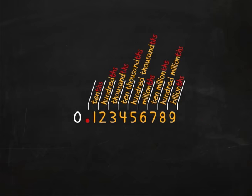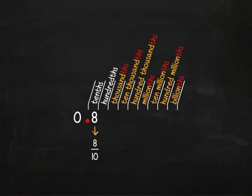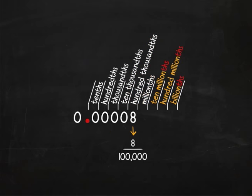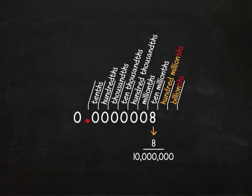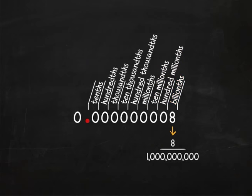These decimal numbers are the same as fractions. Eight-tenths can also be written like this. Eight-hundredths can look like this. Eight-thousandths looks like this. Here you have eight ten-thousandths, eight one-hundred-thousandths, eight millionths, eight ten-millionths, eight one-hundred-millionths, eight billionths, and so on.